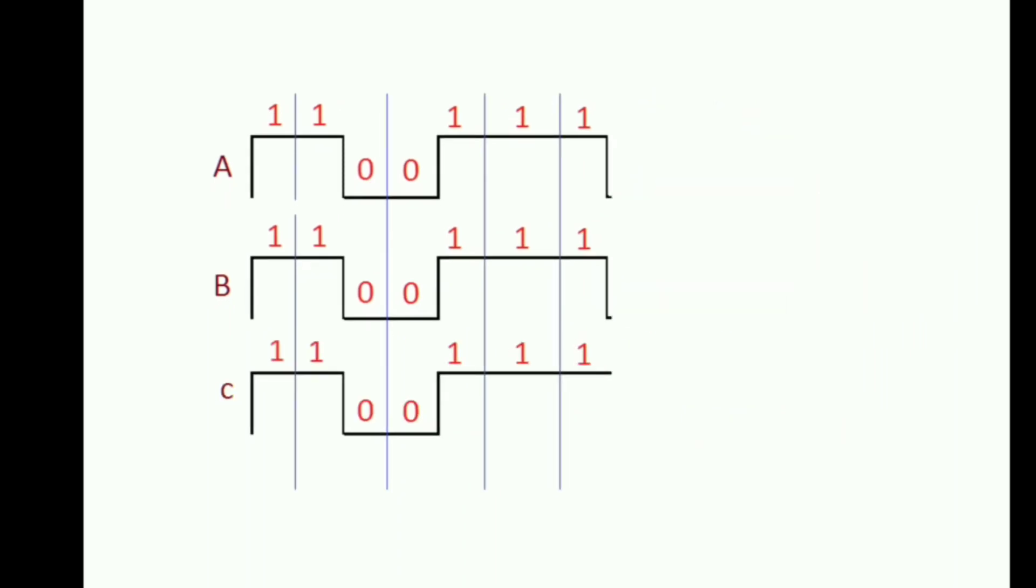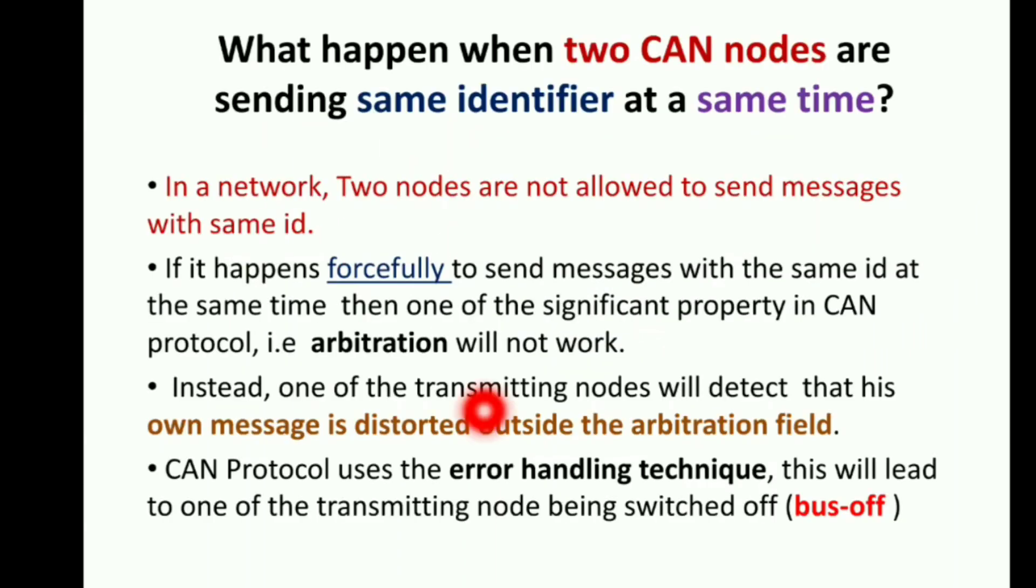In this way we can get the solution. So the answer is: in a network, two nodes are not allowed to send messages with the same ID. If it happens, also the arbitration will fail. Once the arbitration fails, it will go to the error handling technique which throws the bus-off error. So this is the simple and short answer with a beautiful explanation given here.